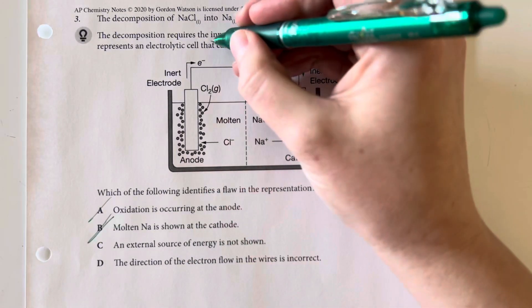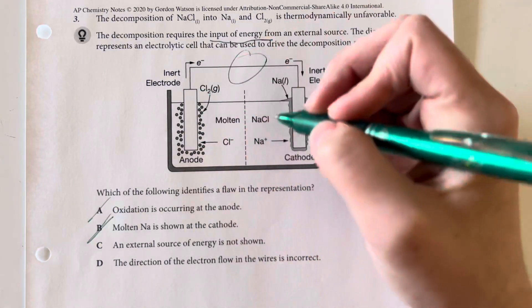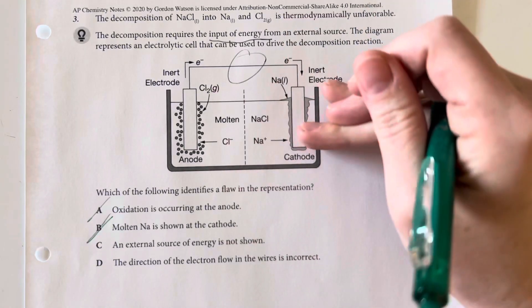An external source of energy is not shown. That is true. Again, it says that there must be an input of energy from an electrical source. That source is not shown. We don't have anything here actually driving this representation, so that is a problem with this representation.